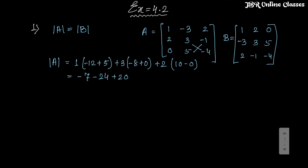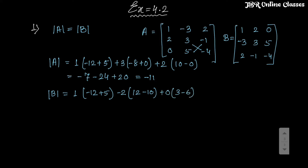So det(A) = -24 - 7 + 20 = -31 + 20 = -11. Now find det(B) using the same formula: 1×(-12 + 5) + (-2)×(12 - 10) + 0×(3 - 6) = -7 + (-4) + 0... that gives -11. So det(A) = det(B), and it's proved.